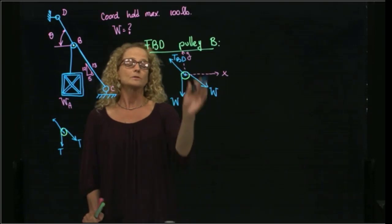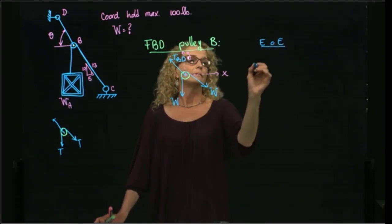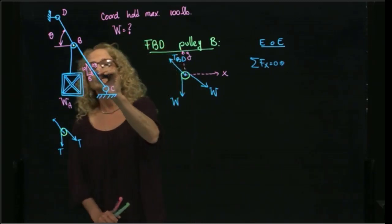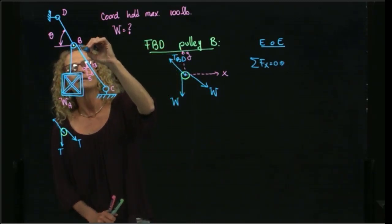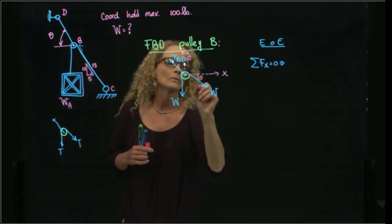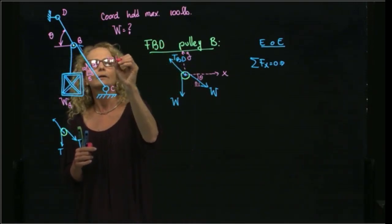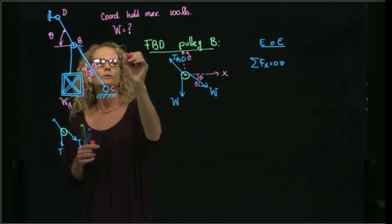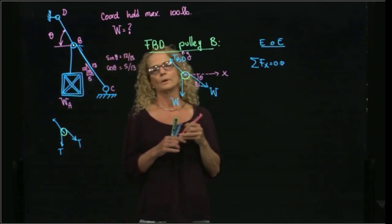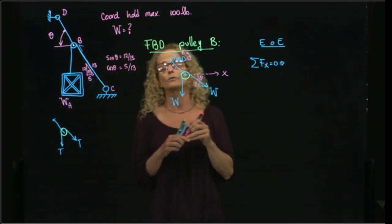Once we have the free body diagram, the next step is always to do the equations of equilibrium. We will sum forces in X equal to 0. We have this weight with an angle, and this angle is exactly the same as this angle over here. The sine of theta will be the opposite over the hypotenuse, and the cosine of that angle will be the adjacent over the hypotenuse. We also have an angle theta which we do not know, so we also have to find that angle theta.